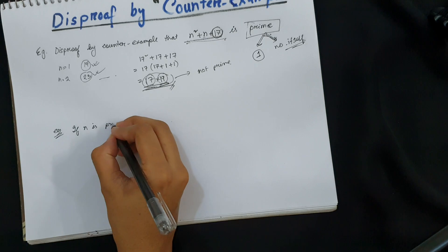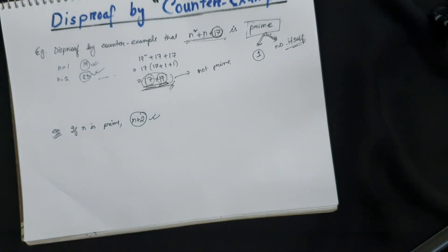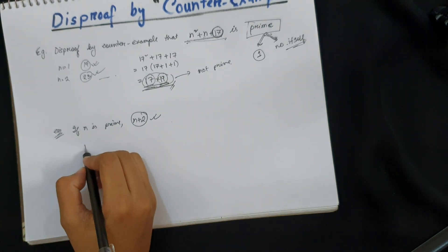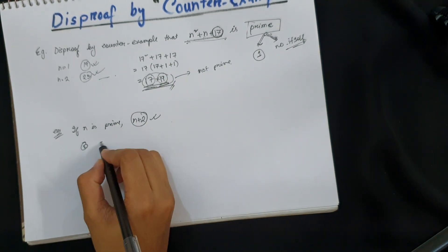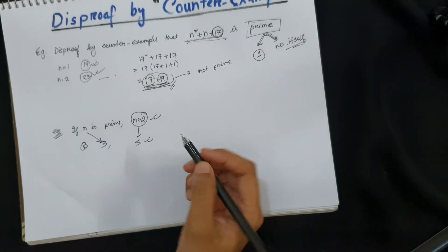n is a prime number, we need to disprove that n + 2 is also a prime number. So if we choose, suppose if we select 3, if n is 3, n + 2 is 5, it's a prime number.